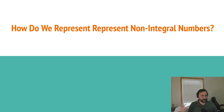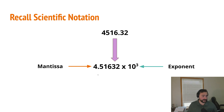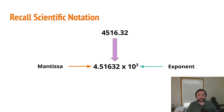So how exactly do we represent these fractional numbers inside a binary? A great place to start is to think about scientific notation, because our floating point formats are based around scientific notation. Here we have a normal decimal number, 4516.32. To convert that into scientific notation, we move the decimal place over three places so that we have a single non-zero digit to the left of the decimal point, followed by our other significant digits, and we multiply it by 10 to a power. This power is based on how many places we move the decimal point, so three in this case.